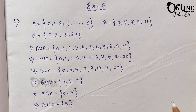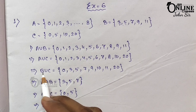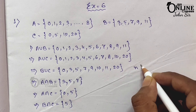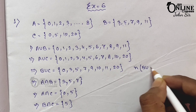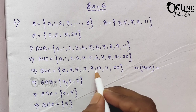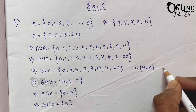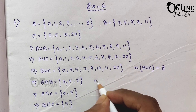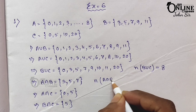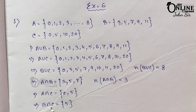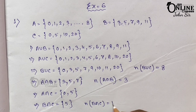Now you have to find out the cardinal number of B union C. The cardinal number — N means cardinal number. So N(B union C) equals 8 elements, so that equals 8. Next, N(A intersection B) equals 3. And the last one, N(B intersection C) equals 1.